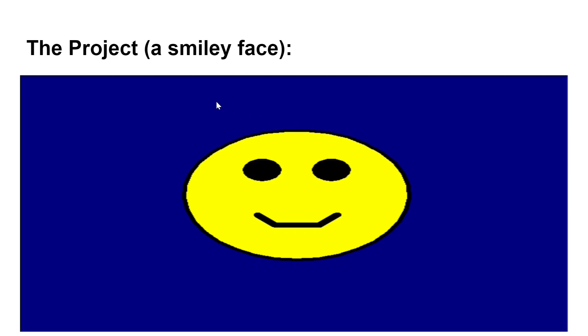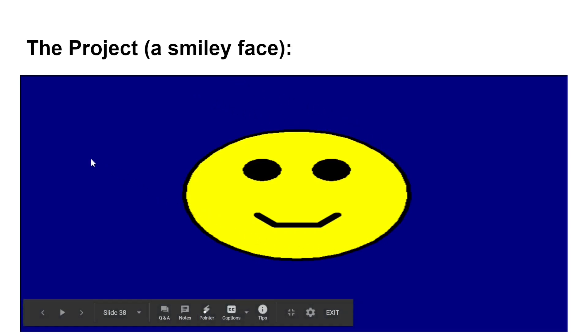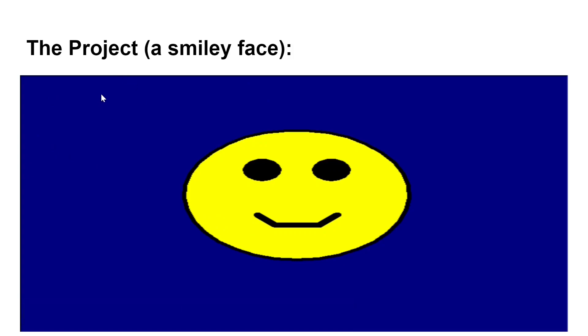Now we're going to make the project, which is a smiley face — this is how it looks, and we've also added a background colour. You need to open up IDLE, create a new file, and call it turtle_smiley.py. You can save it anywhere you want — I've saved mine in Python projects. Once you've done that, we can start typing the program.